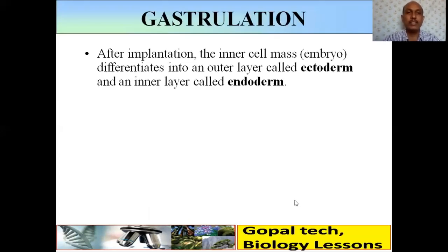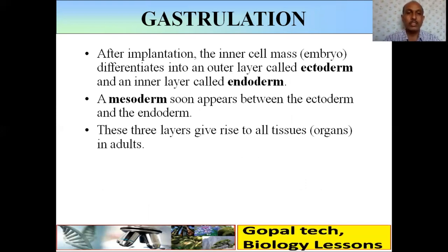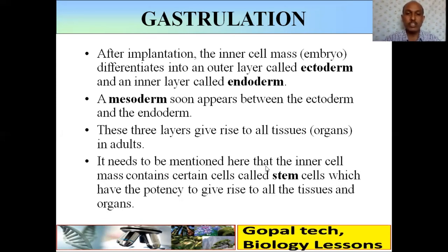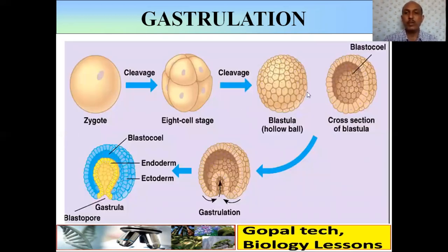Gastrulation: after implantation, the inner cell mass differentiates into an outer layer called ectoderm and an inner layer called endoderm. A mesoderm soon appears between ectoderm and endoderm — making us triploblastic animals (as studied in 9th/11th standard). These three layers give rise to all tissues and organs in adults. The inner cell mass contains certain cells called stem cells, which have the potential to give rise to all tissues and organs — these are now being stored for future medical use.